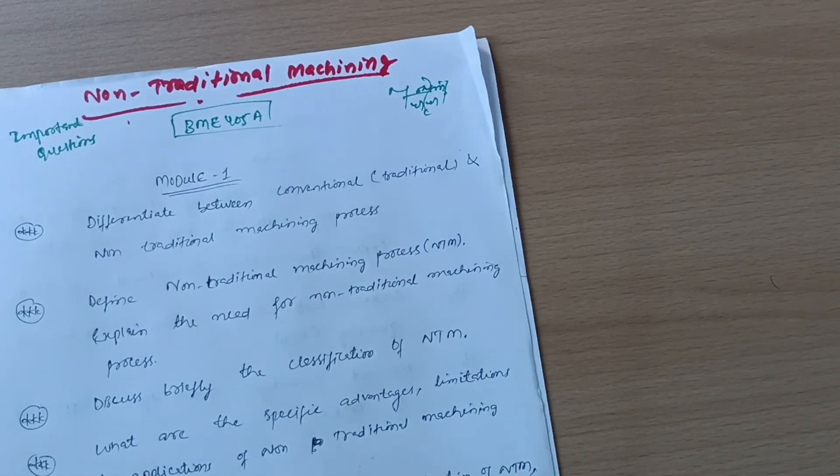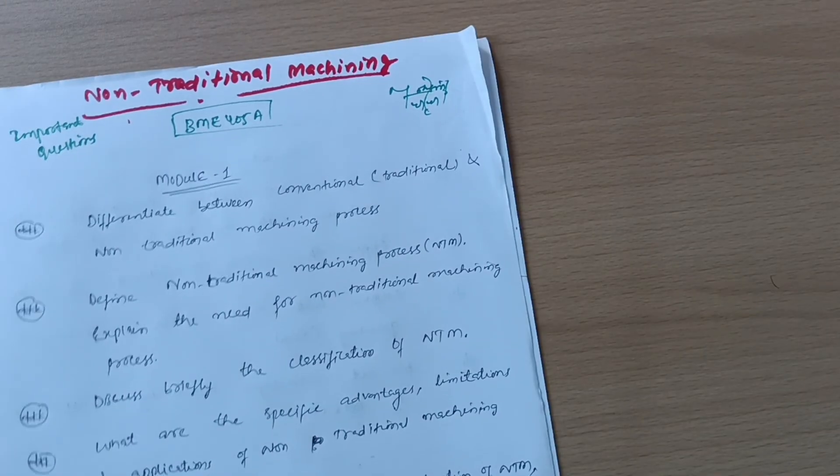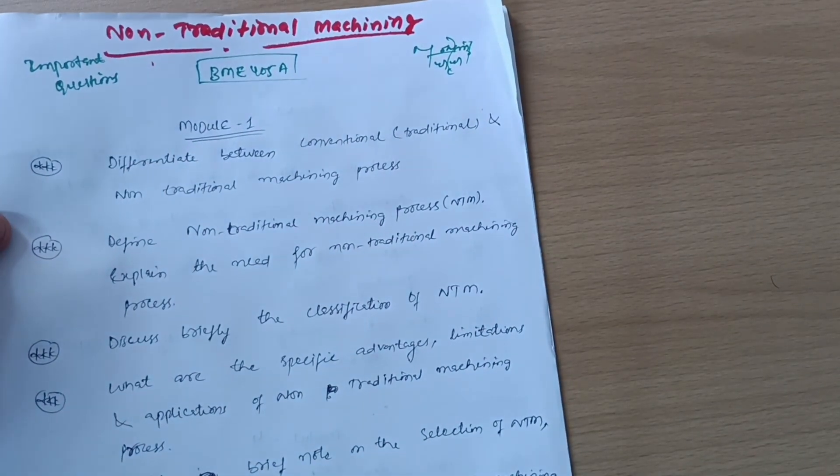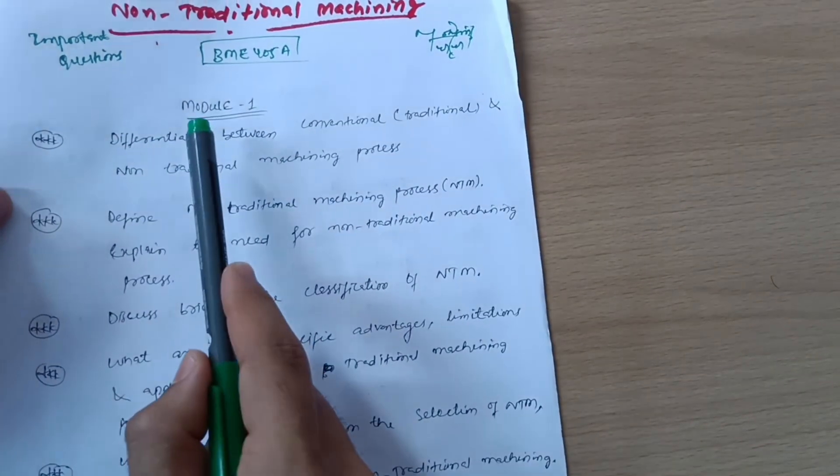There are some important questions which will be fixed in the examination, so you have to go through them. There are two chapters in each module. You can only refer one module - there is a choice. That is why I am telling you this is the subject which is very difficult to fail.